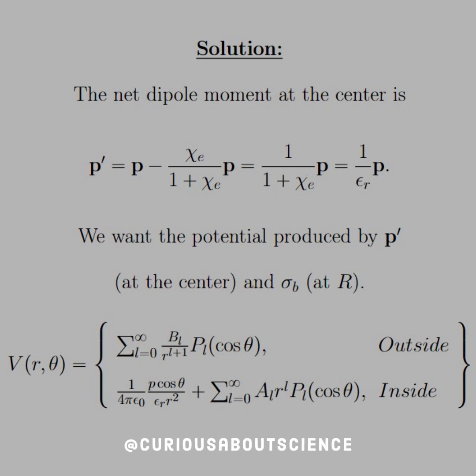Since we want the potential produced by P prime, which is at the center, and the boundary charge sigma B at R, we need to consider the potential of the sphere, which we solved back in chapter 3, which we see in the piecewise definition for outside and inside.